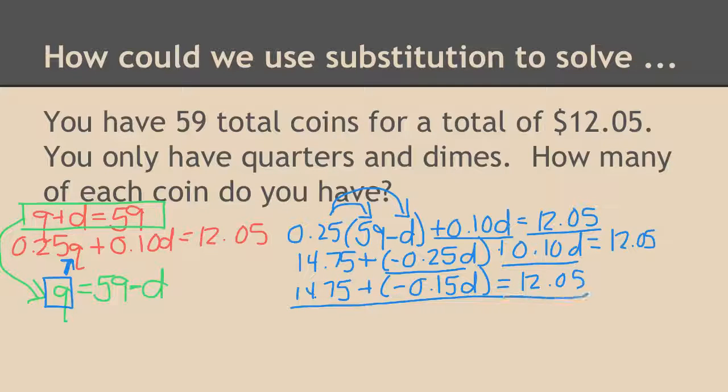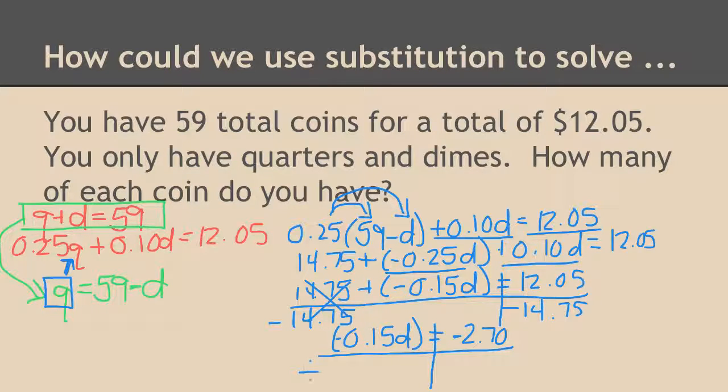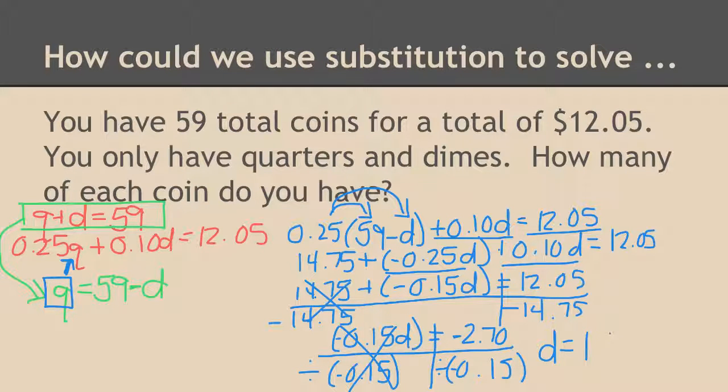Two-step problem. First let's get rid of our 14.75. That leaves the negative 15 cents times d on one side and negative 2.70 on the other. Second step, divide by your negative 15 cents and it looks like we're going to end up with 18 dimes.